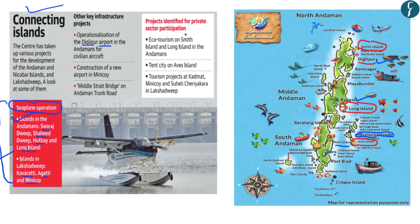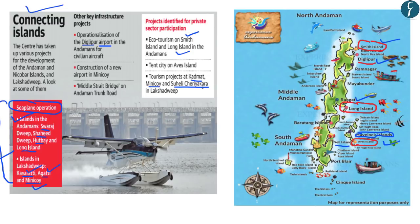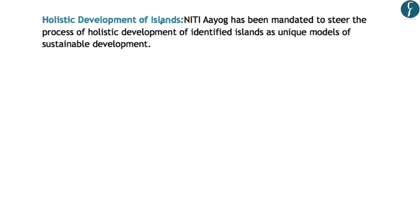Smith Island is in North Andaman and Long Island is in the middle. A tent city to promote tourism will also be started at Aves Island. Regarding Lakshadweep, sea plane operations will start at Karavatti, Agatti, and Minikoy islands. Tourism projects will also start in Lakshadweep at Kadamat, Minikoy, and Suheli Cheriyakara, with private participation promoted. The location of all these islands mentioned in this article is important for the preliminary examination.